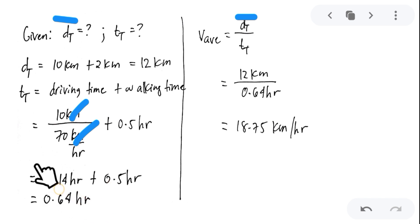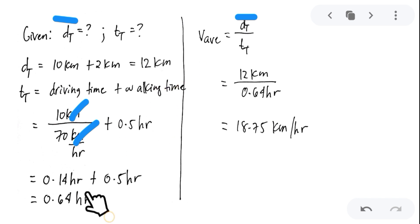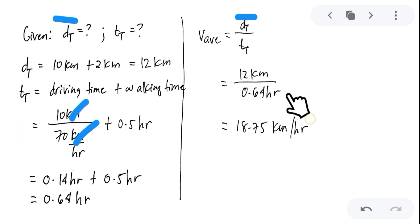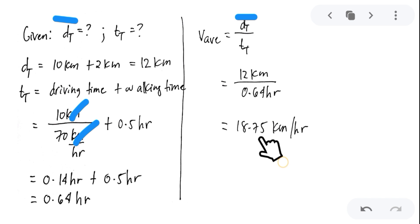Now that we have the total displacement and total time, we can find the average velocity. That is the total displacement of 12 kilometers over the total time of 0.64 hours. Dividing that gives 18.75 kilometers per hour. That is the answer.